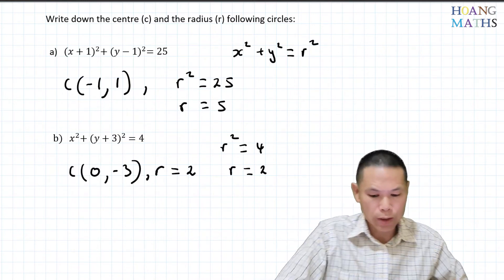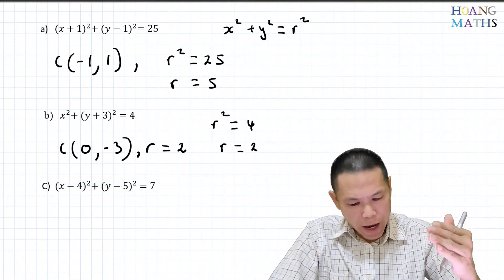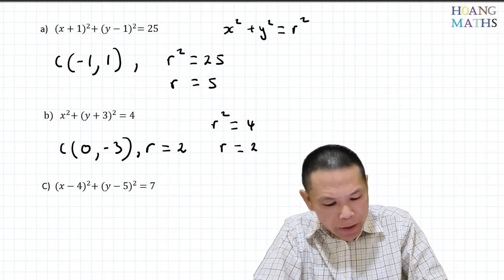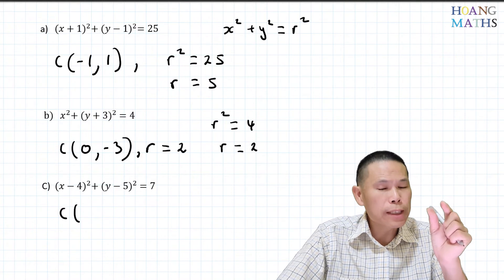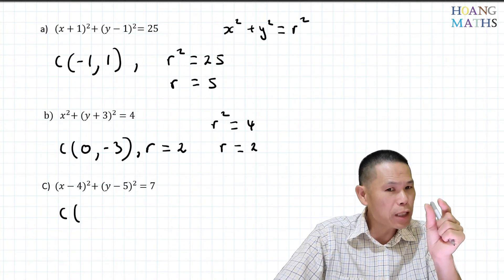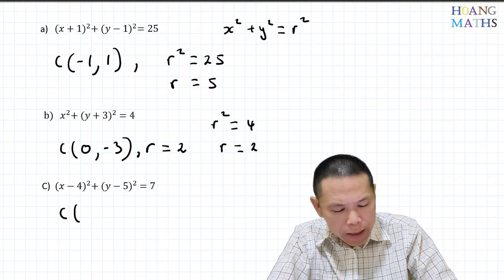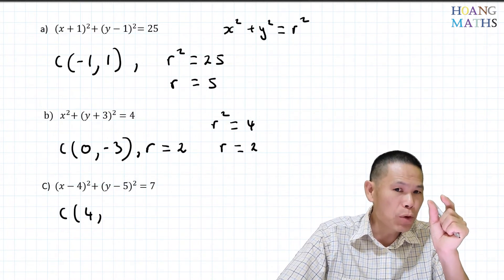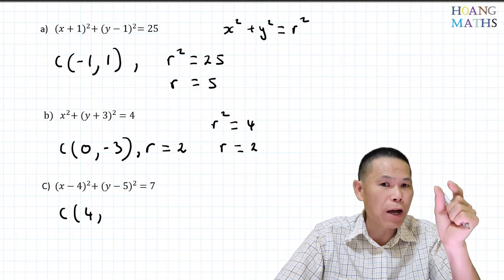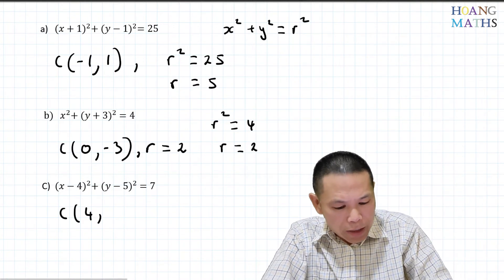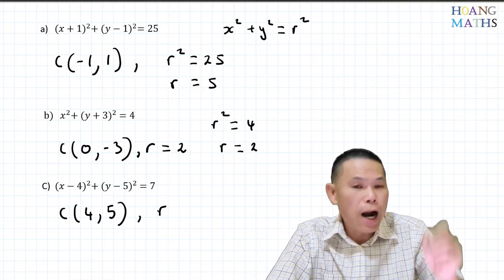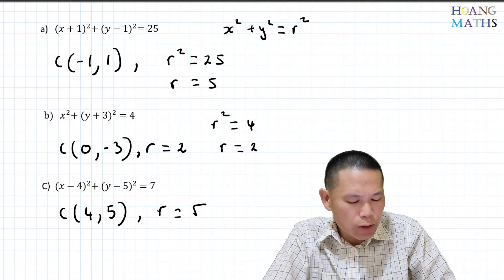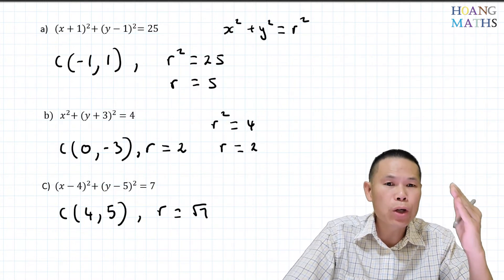For the equation (x minus 4) squared plus (y minus 5) squared equals 7: because it's x minus 4 inside, it moved four units to the right, so the x-coordinate of the center is 4. Because it's y minus 5, it moved five units up, so the y-coordinate is 5. The center is (4, 5). Since r squared equals 7, the radius is root 7. I hope you got all of them correct!